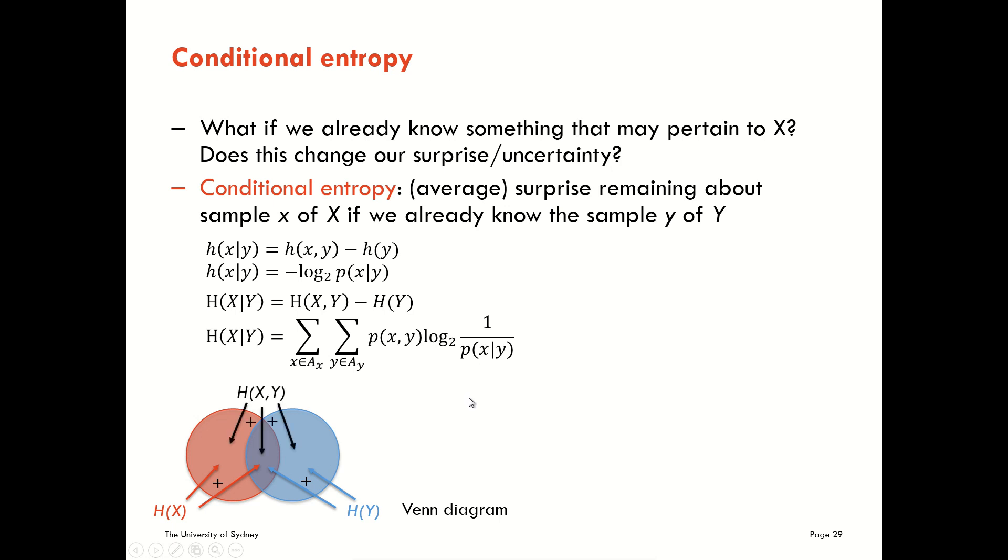The joint entropy of these two considered together is the sum of these three separate areas here. Notice we're not adding the two circles because that would double count this overlapping section. For the joint entropy we have the three separate areas and don't double count that section. That's why graphically the joint entropy is not necessarily as large as the separate sum of marginal entropies here.